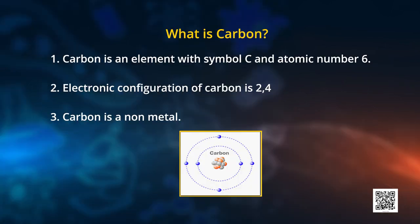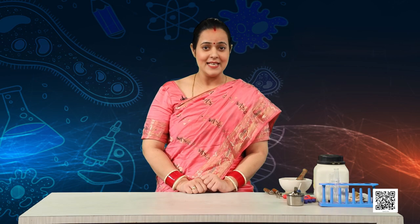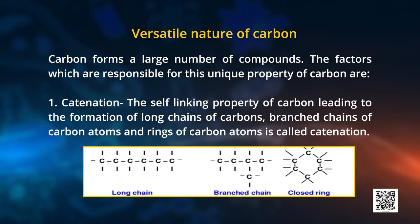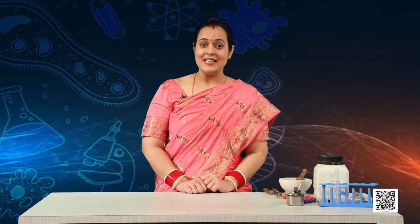As you know, the atomic number of carbon is 6 and the electronic configuration of carbon is 2, 4. The first unique property is known as catenation. Catenation is the self-linking property of carbon, leading to the formation of long chains of carbon, or branched chains of carbon, or circular — that is, closed — shapes of carbon chains. This is a task for you: take help of clay and toothpicks and try to make structures related to straight chain, branch chain, and circular chains of carbon.